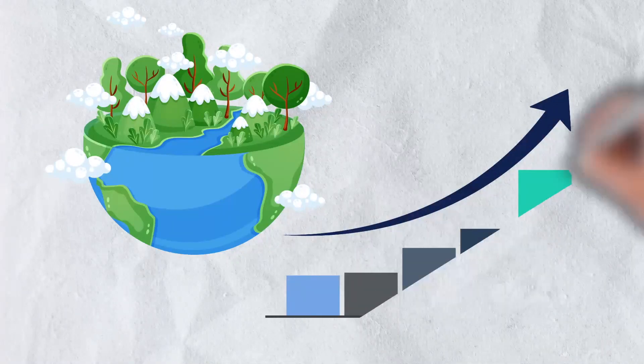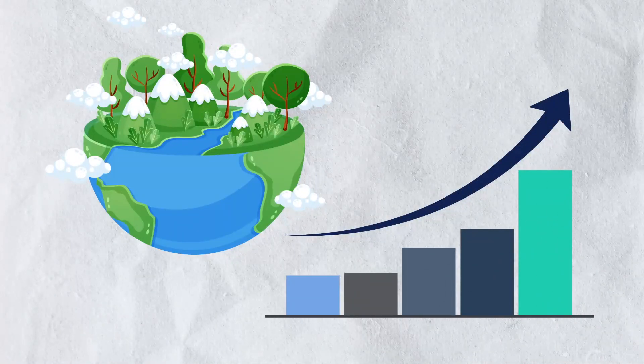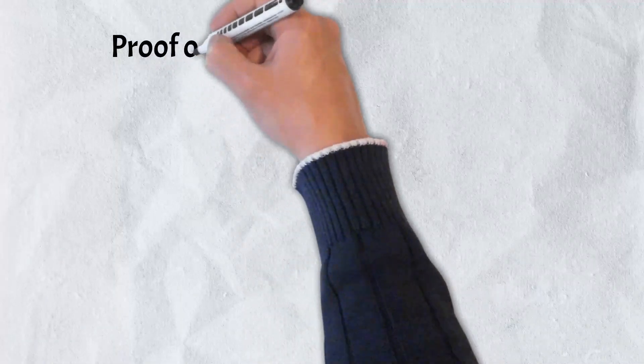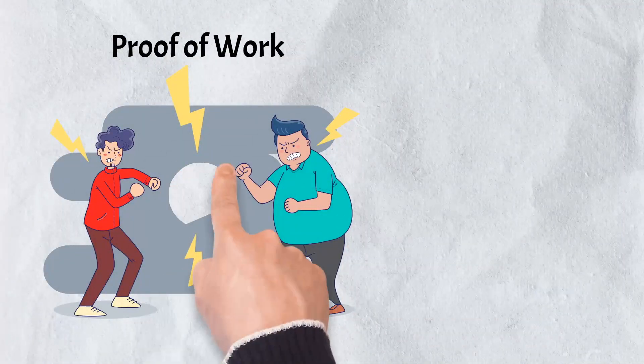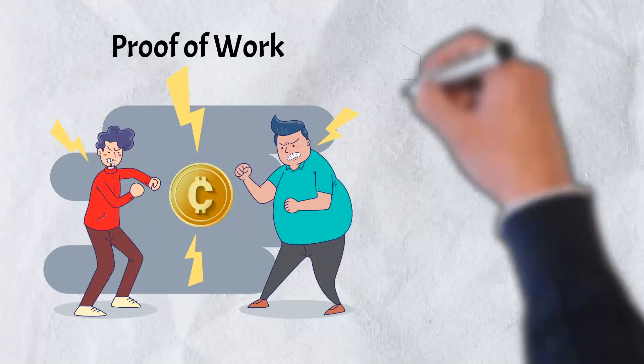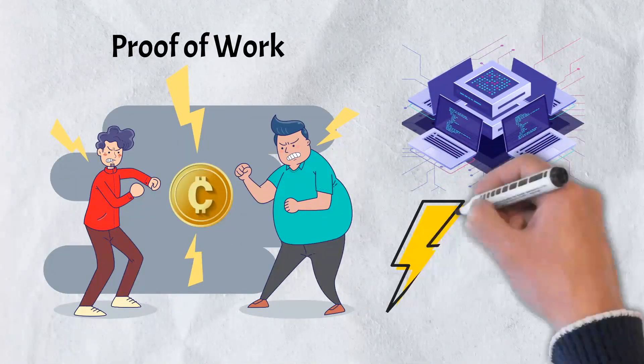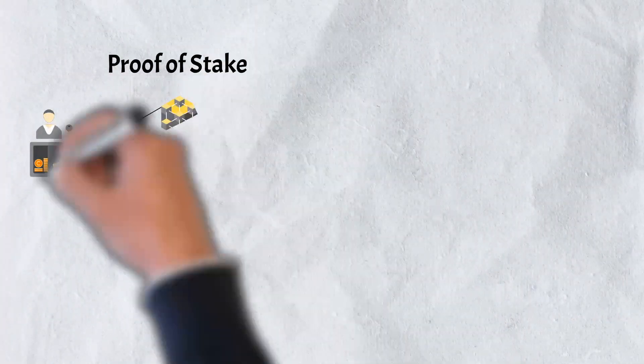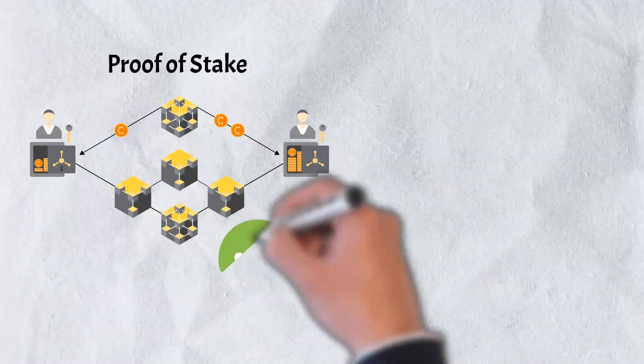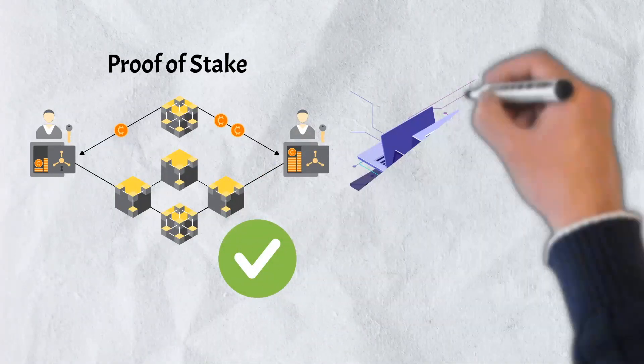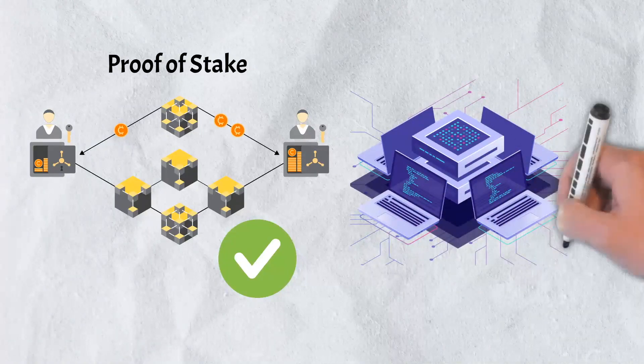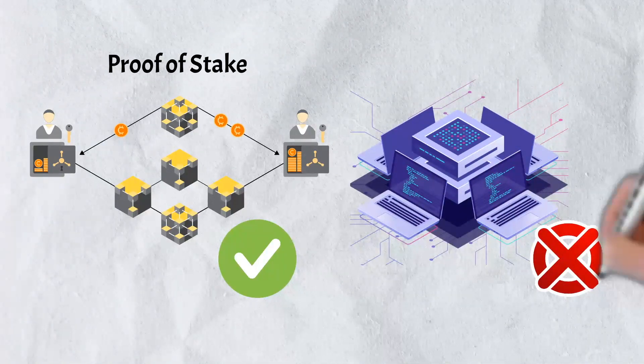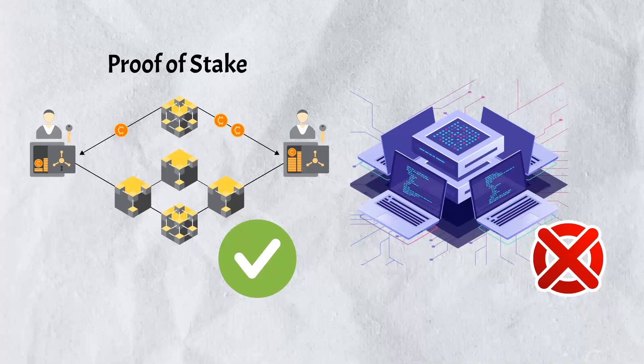Proof-of-stake is a protocol that aims to address the environmental and scalability difficulties that plague the proof-of-work protocol. A competitive approach to transaction verification is applied when it comes to proof-of-work. As a result, people are naturally motivated to find ways to gain an advantage, usually in the form of more computers, which leads to more energy consumption and negative environmental impact. The proof-of-stake system attempts to address these issues by effectively swapping staking for computational processing power. The network randomly determines a person's mining capabilities, and because miners can no longer rely on more computers to gain an edge, this should result in a significant reduction in energy use.